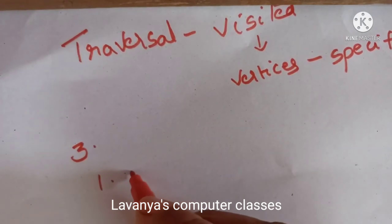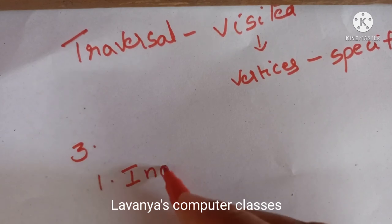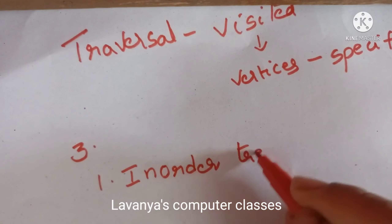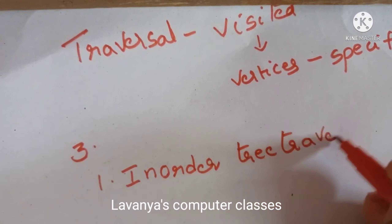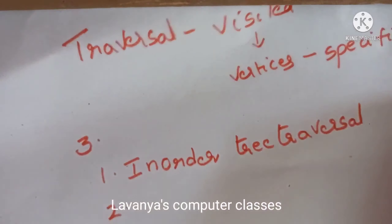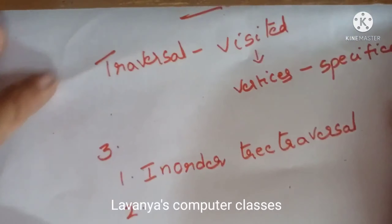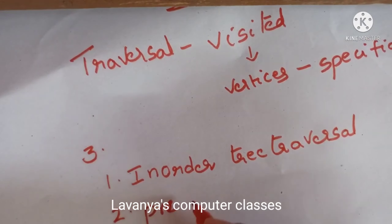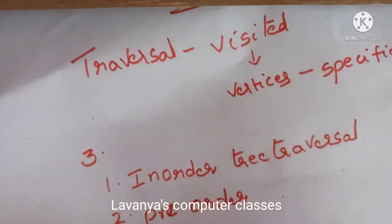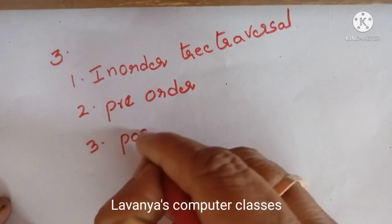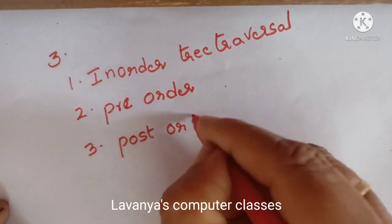The three tree traversal methods are: first one is in-order tree traversal method, second one is pre-order tree traversal method, and third one is post-order tree traversal method.